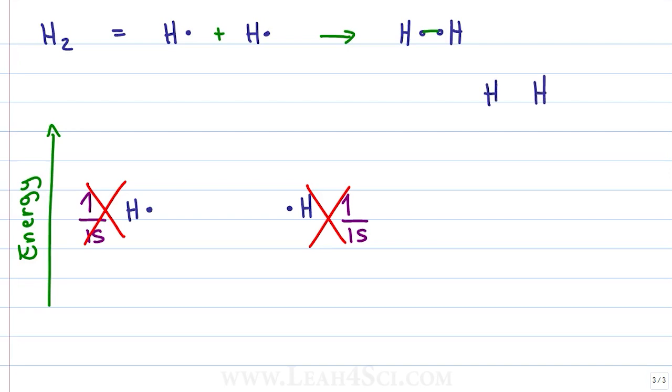Another way to visualize this is the two hydrogen atoms. We have the one atomic orbital, the second atomic orbital. Now they're overlapping and you get one giant molecular orbital.